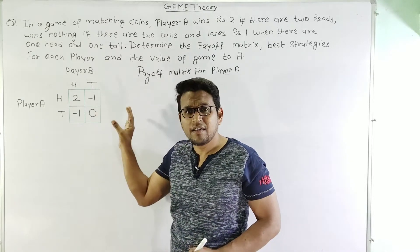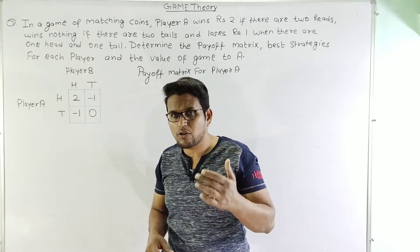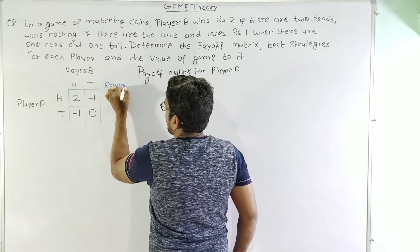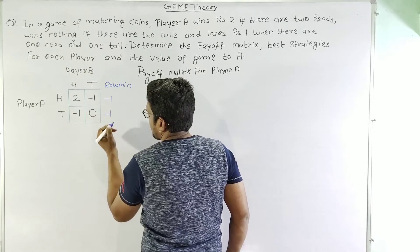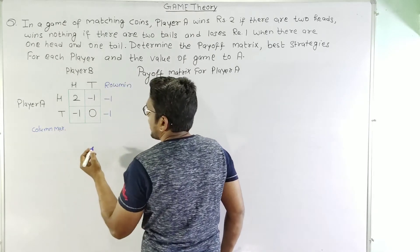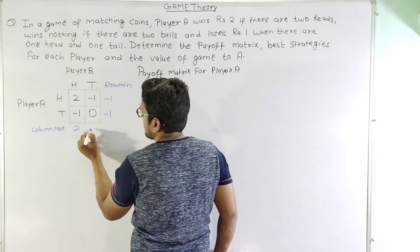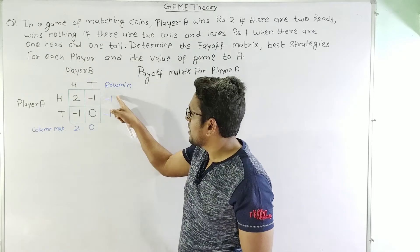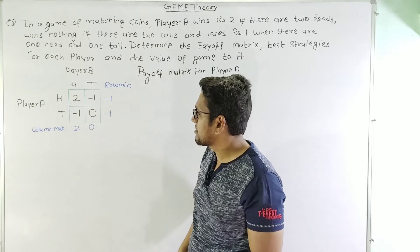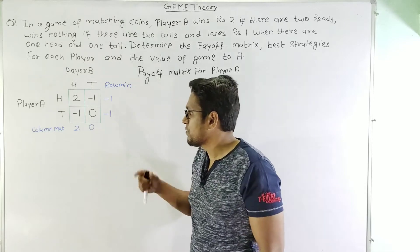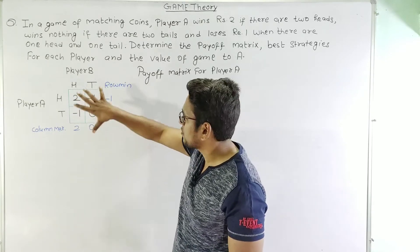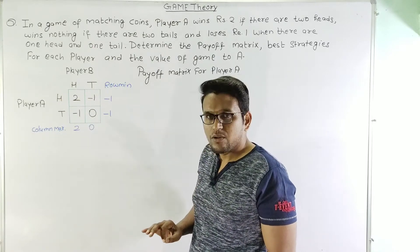In any game theory problem, first we need to identify if there is a saddle point or not. We calculate the row minimum: both rows give a minimum of -1. We calculate the column maximum: the first column gives 2 and the second column gives 0. Since no value in row minimum equals any value in column maximum, no saddle point exists. This matrix is already in 2×2 form, so no further reduction is needed.